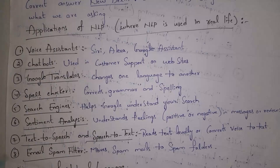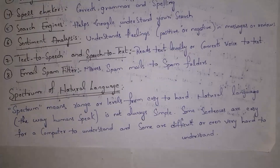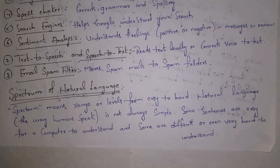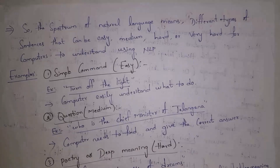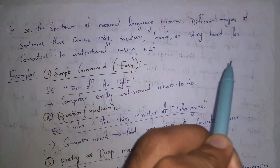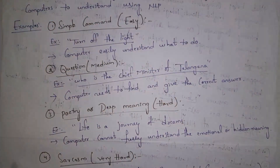Next I will explain the spectrum of natural language. Spectrum means range or levels from easy to hard. Natural language means the language we speak — like Telugu, Hindi, English, etc. Natural language is not always simple; some sentences are easy for a computer to understand and some are difficult. So the spectrum of natural language refers to different types of sentences that can be easy, medium, hard, or very hard for computers to understand using NLP.